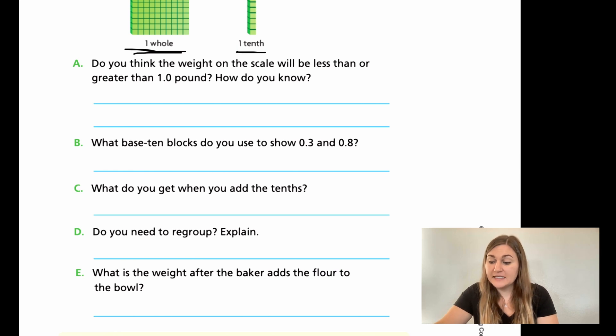C, what did you get when you add the tenths? So when you add your tenths together, what would you be getting? How many total pieces? Trying to not give the answer away. And then for D, do you need to regroup? So did it go over one? Did it not? Do you need to regroup? Think about that. And E, what is the weight after the baker adds the flour to the bowl? So this is where we're actually answering the question, what's our total weight after we add those two together? All right, go ahead and try your best on these problems. We'll come back and solve them together when you're done. So go ahead and hit pause here.